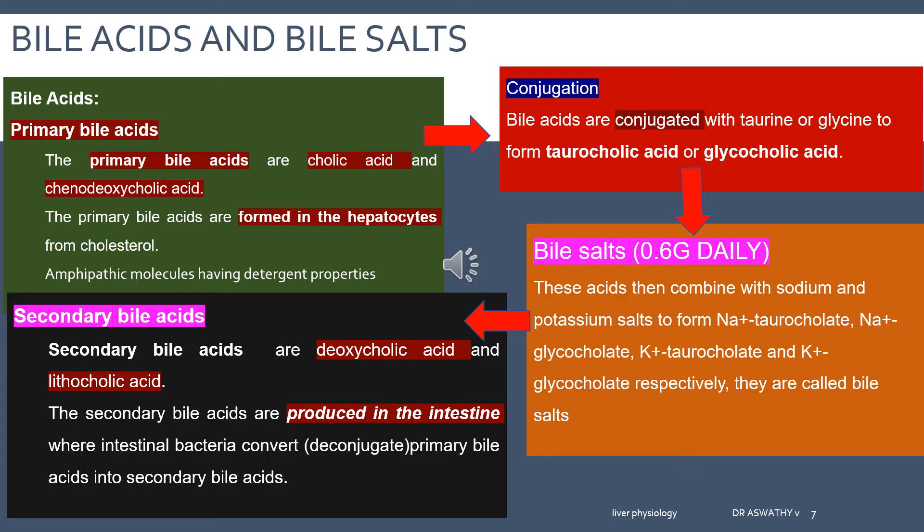This is very important: primary bile acids are formed by the hepatocytes, while secondary bile acids are formed in the intestine by the action of gut microbiota. Primary bile acids are conjugated with glycine and taurine to form sodium and potassium salts — the bile salts. These bile salts are secreted into bile, reach the intestine, are deconjugated, and some are absorbed into portal circulation. The remaining are converted into secondary bile acids. This cycle is called enterohepatic circulation.